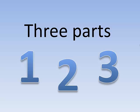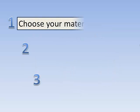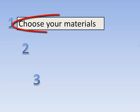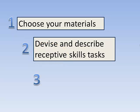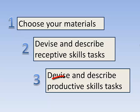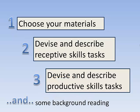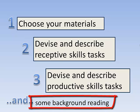So the assignment comes in three parts. The first part is that you have to choose your materials — a reading text or a listening text. The second part is you have to devise and describe receptive skills tasks, that's reading and listening tasks. And then for the third part you have to devise and describe productive skills tasks, that's speaking or writing tasks. There is also a requirement to show that you've done some background reading for this assignment.